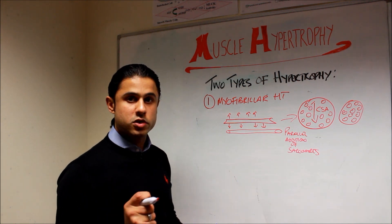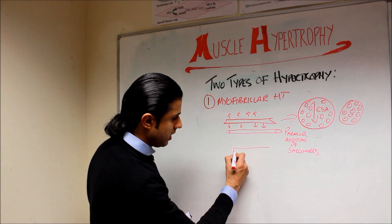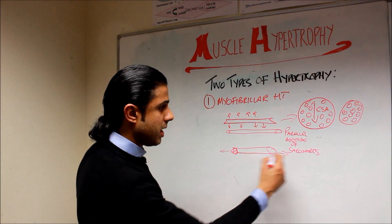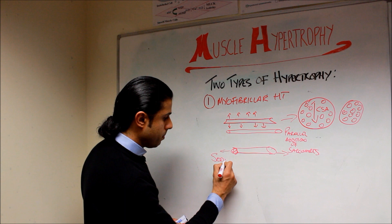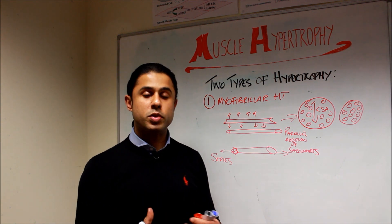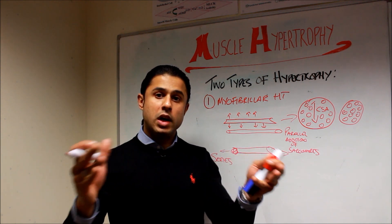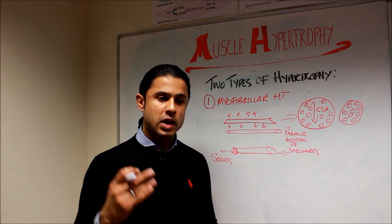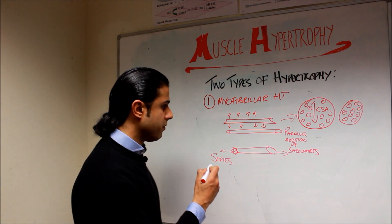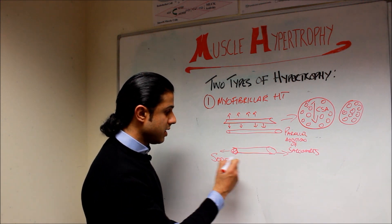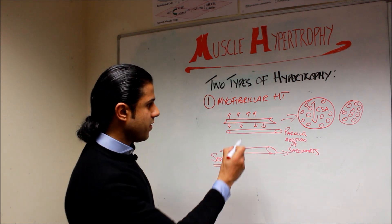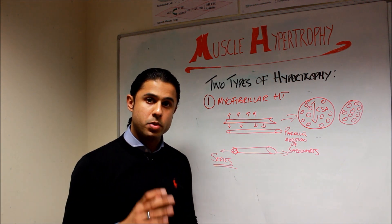In certain sports, sarcomeres can also be added at the ends — in series — which makes the muscle slightly longer. This is useful when you need to produce maximum force with the muscle across a very large range of motion, such as in 100-metre sprinting where you're producing and applying force over the full range of motion for that joint. However, when you do general gym-based resistance training focusing on improving strength, you're having parallel addition of sarcomeres — that is myofibrillar hypertrophy.